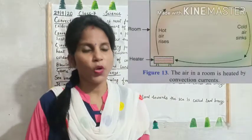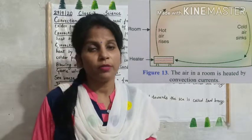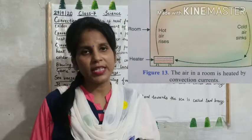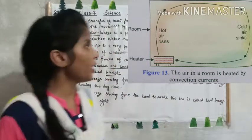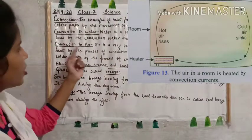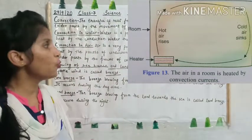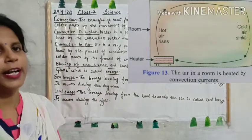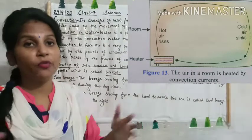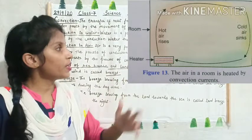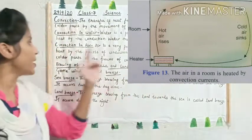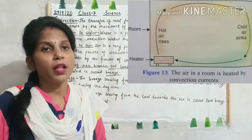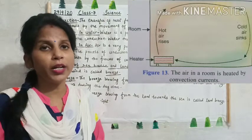Convection in air: we know that convection, the method of heat transfer, takes place in liquids and gases. Air is a very poor conductor of heat, so air cannot transfer heat by the process of conduction because in gases the molecules are very loosely packed. Air transfers heat from the hotter parts to the colder parts by the process of convection.